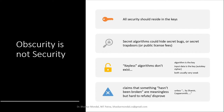Claims that an algorithm has not been broken are meaningful but hard to refute or disprove. Many times we say that certain algorithms have not been broken yet, but it doesn't mean that represents ultimate security. Today nobody has reported breaking it, but who knows — tomorrow somebody could come and say here is proof that I have broken this algorithm.